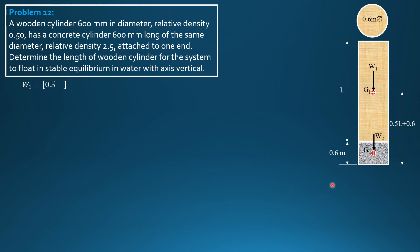Weight 1 is specific weight of timber, 0.5 gamma of water, then area times length L. Weight 2 is 2.5 of specific weight of water, area times 0.6. So the total weight is 0.5 gamma of water area L plus 2.5 gamma of water area times 0.6. Factor out specific weight of water area, we'll have quantity 0.5 L plus 1.5.